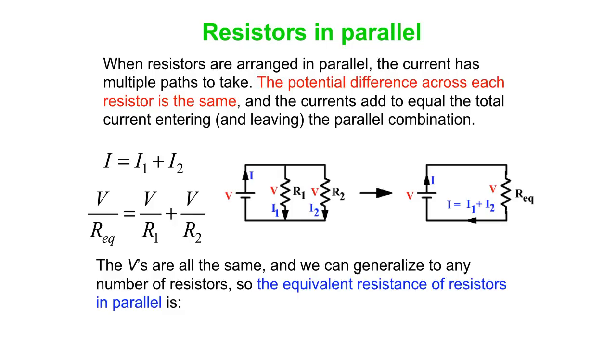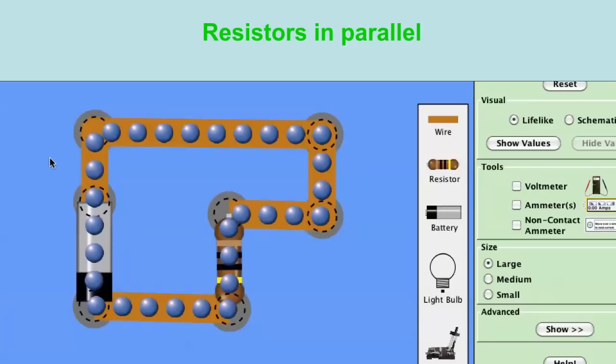But what if we have three resistors or five resistors or 17 resistors in parallel? Then here's our general expression: one over the equivalent resistance is one over R1 plus one over R2 plus et cetera, et cetera.